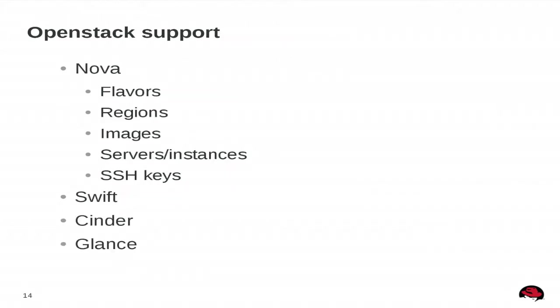For OpenStack specifically, Delta Cloud has pretty complete coverage of Nova functionality — flavors, regions, and image service. Swift is mostly all there too, with object storage in the classic Delta Cloud API. We have Cinder and Glance as well. The biggest hole is Quantum, which we're working on. But you can do a lot with Delta Cloud running against OpenStack.